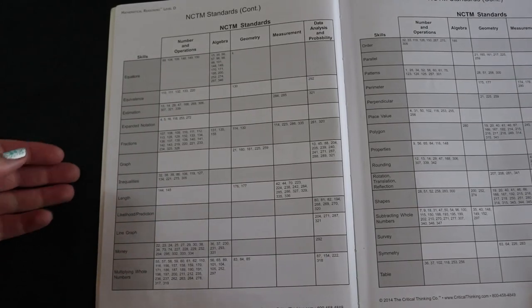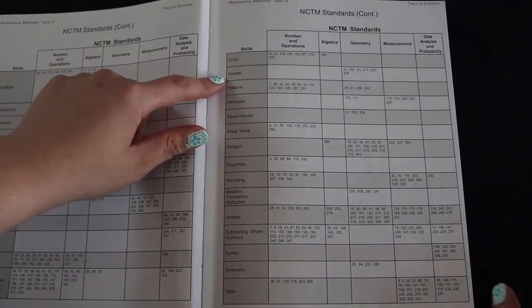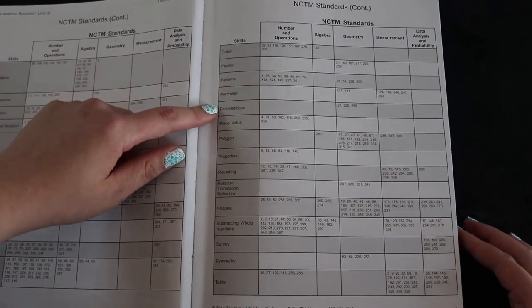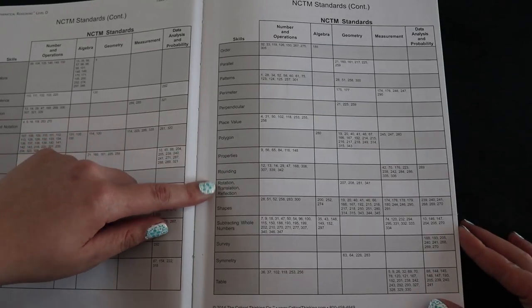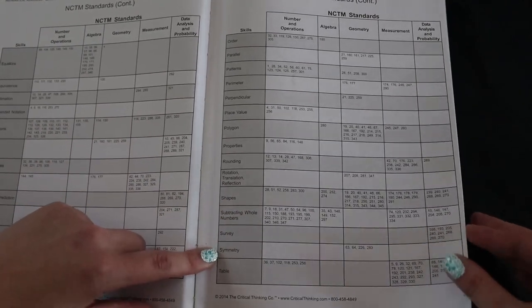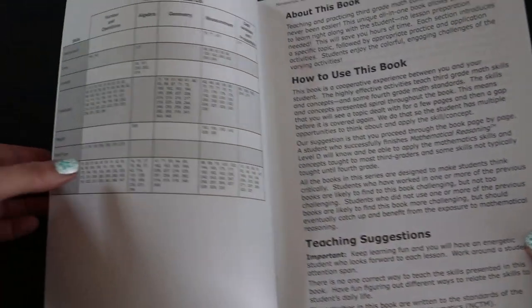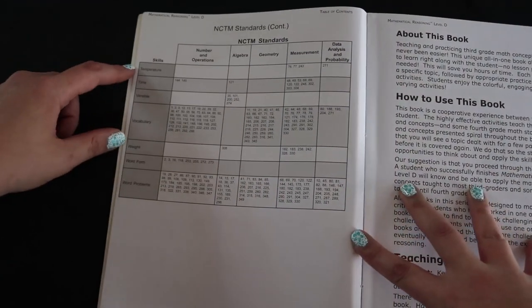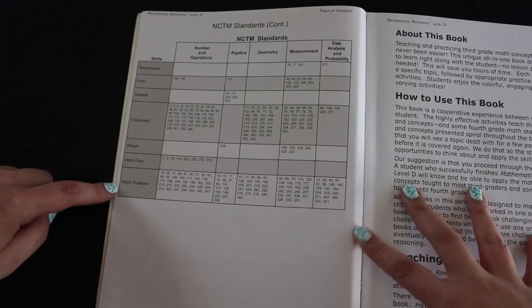Likelihood and prediction, line graph, money, multiplying whole numbers, order, parallels, patterns, perimeter, perpendicular, place values, polygons, properties, rounding, rotation, translation, reflection, shapes, subtracting whole numbers, surveying, symmetry, tables, temperature, time, variables, vocabulary, weight, word form, and word problems.